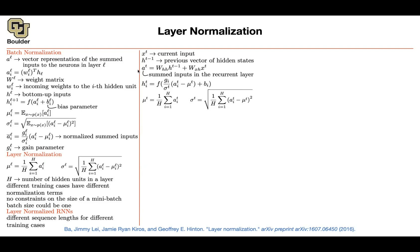Layer normalization is particularly useful for sequence models, and much less useful for images. For images, people still use batch normalization. For recurrent neural networks, language models, and transformers, you see layer normalization.